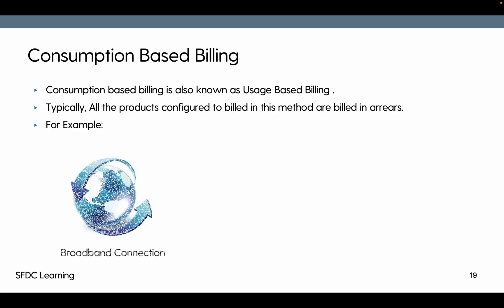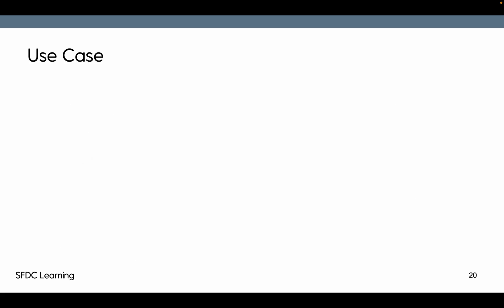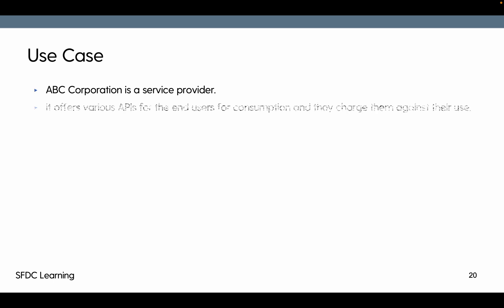Examples of consumption-based billing include broadband connections, where in the past you paid for whatever you consumed. Another example is API calls — many platforms provide services where you pay based on how much you use. For example, if you are accessing APIs that provide certain facilities, you get charged for each API call you make.